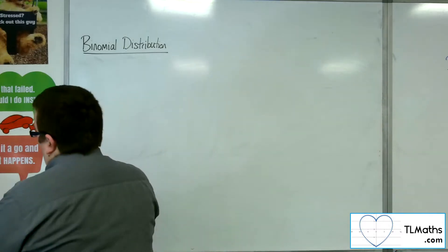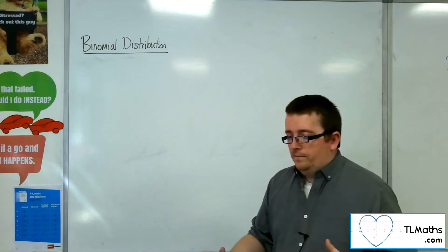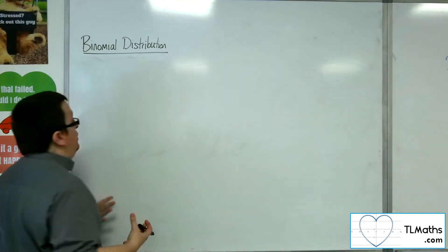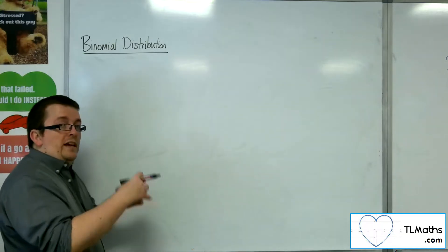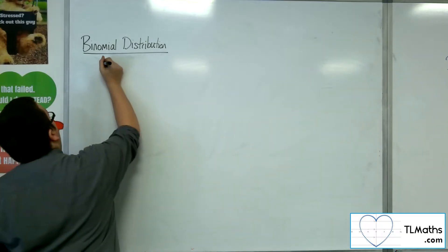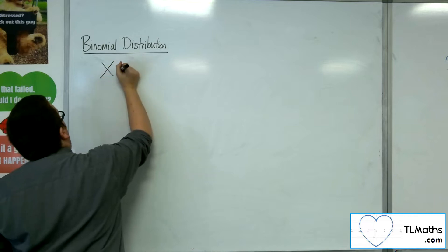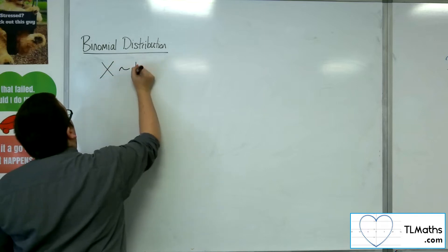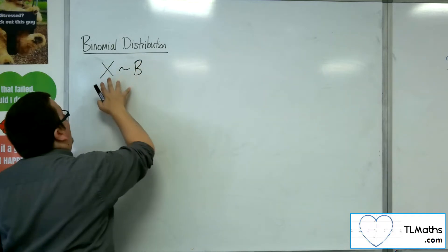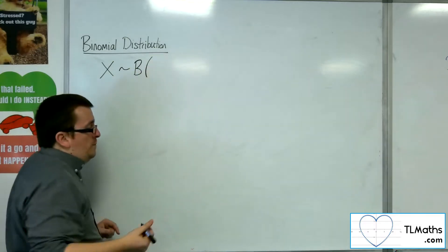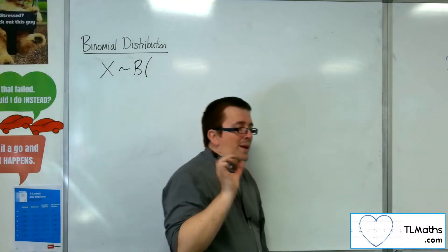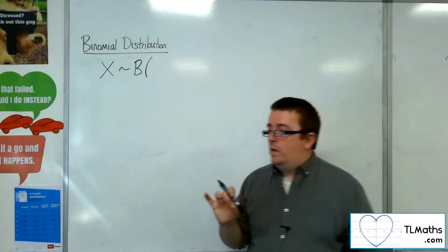So the binomial distribution, how we write it, and this will be a bit of a new notation for you, is that if X is binomially distributed, then we write X tilde B. So X is binomially distributed, and the binomial distribution has two bits of information that it carries with it.